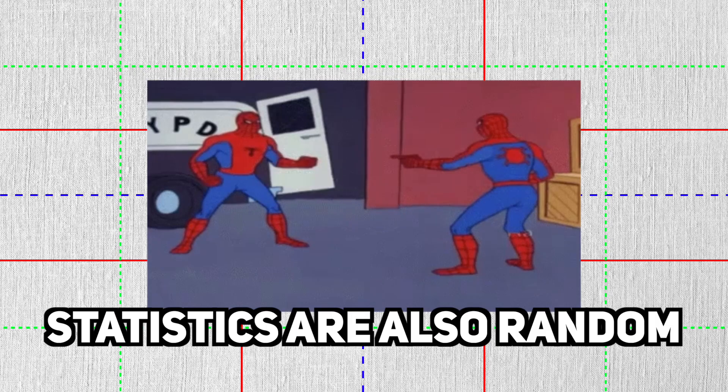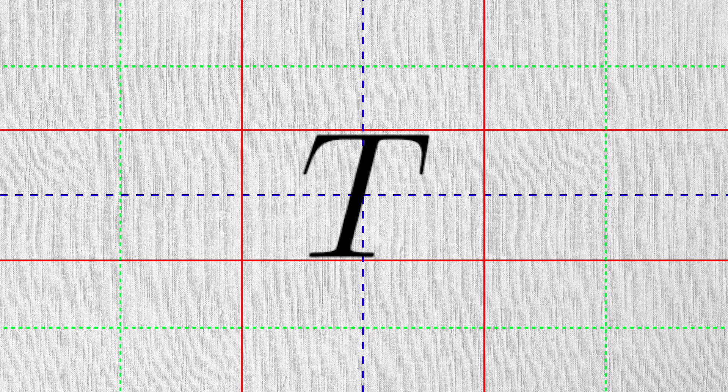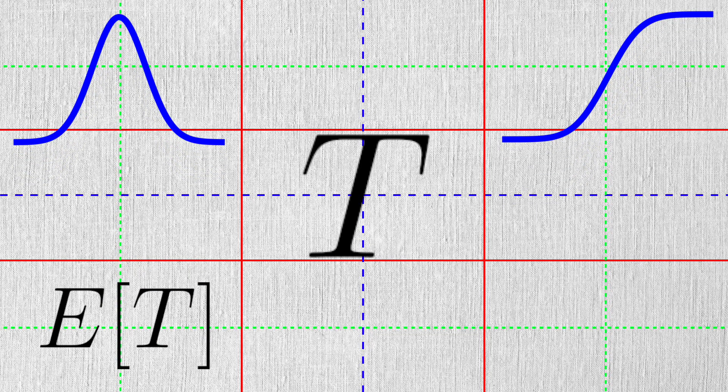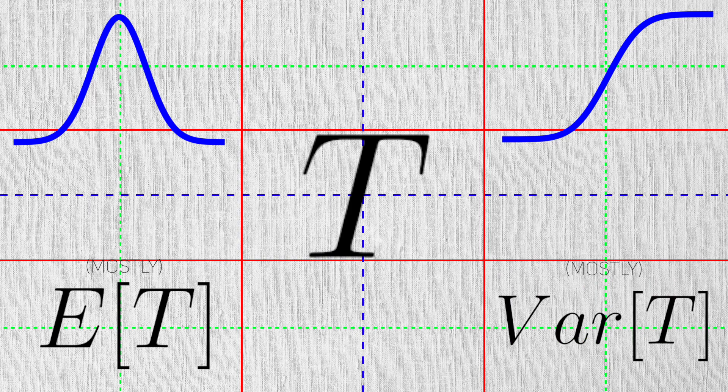Why does that matter? This means that statistics have everything that random variables have. This includes distributions like the PDF, the CDF, expectations, mostly, and variances, mostly.